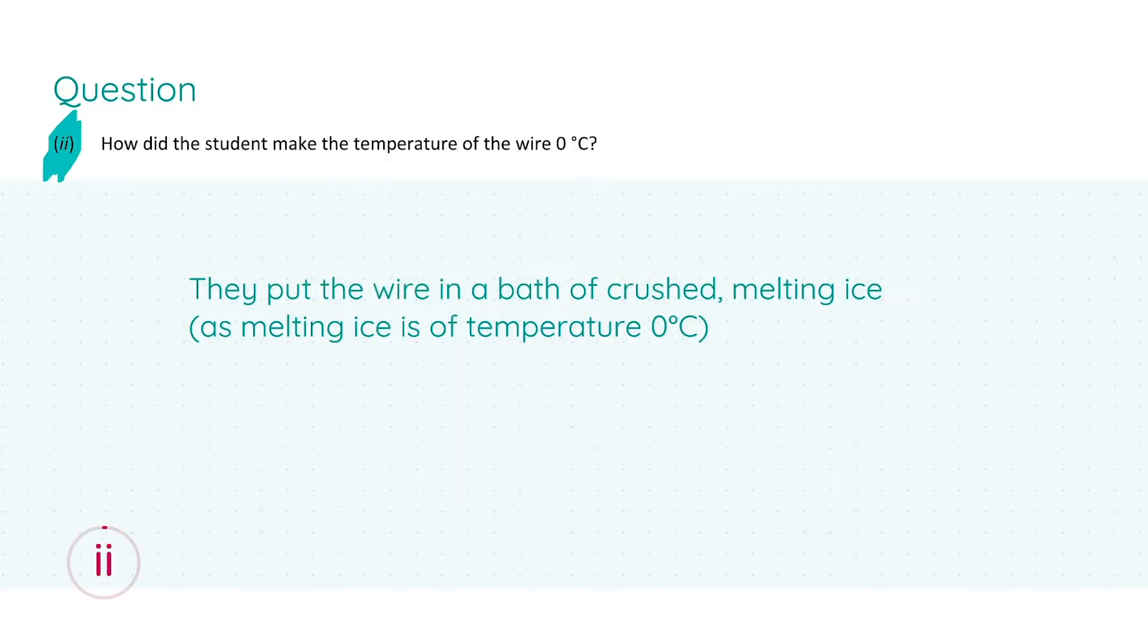In part two, we're asked how did the student make the temperature of the wire zero degrees Celsius? This is a very short answer: they would put the wire in a bath of crushed melting ice. The word melting here is extremely important because melting ice has a temperature of zero degrees. This short explanation is worth three marks.